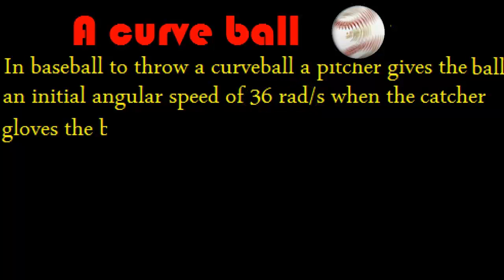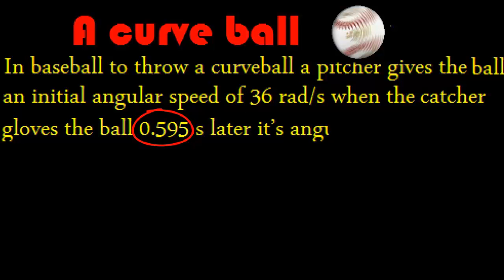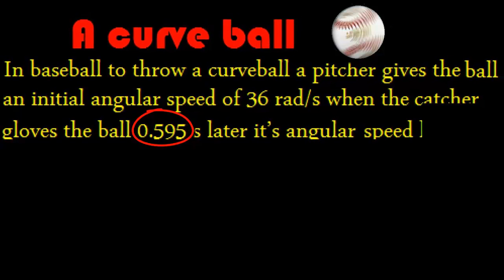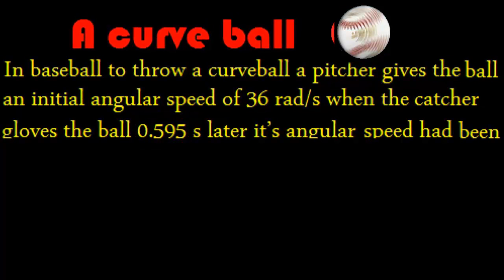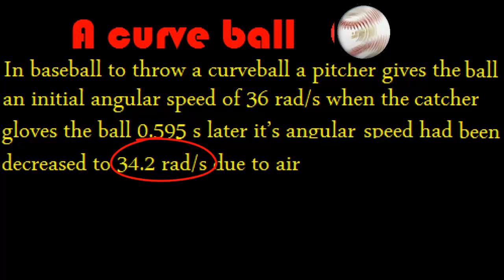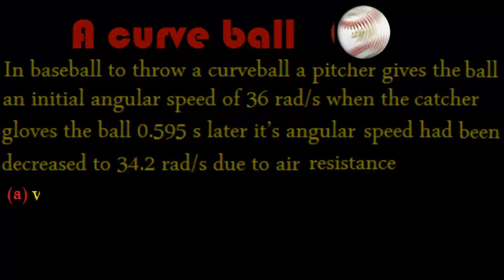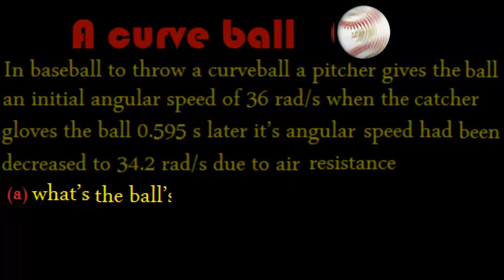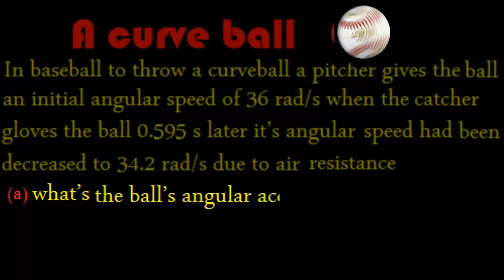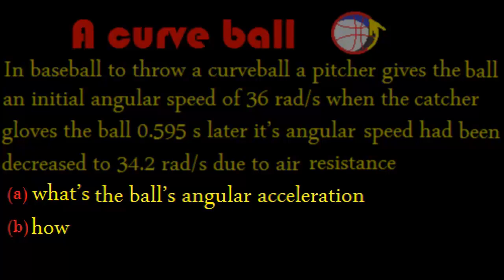that means he caught it 0.595 seconds later. And its angular speed was 34.2 radians. First thing you need to figure out the angular acceleration, which is alpha. Second, you need to know how many times it spun, how many revolutions it spun by the time it was caught.